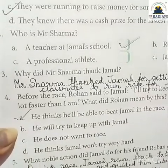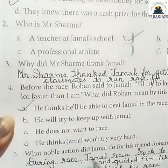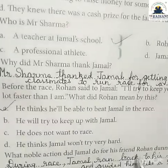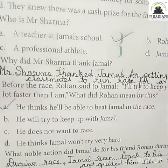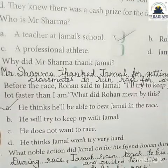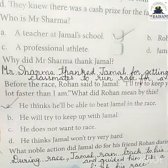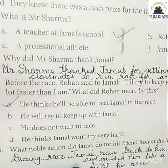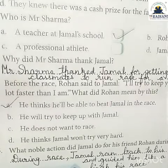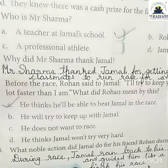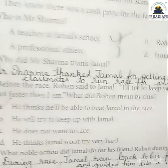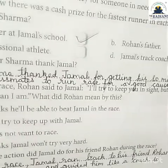Question five: What noble action did Jamal do for his friend Rohan during the race? During the race, Jamal ran back to his friend Rohan and guided him like a coach to help him finish the race.